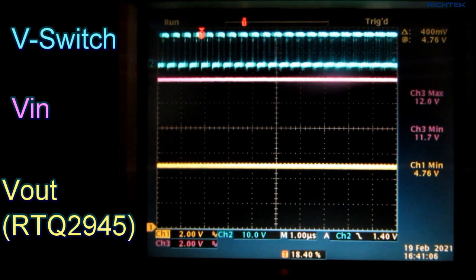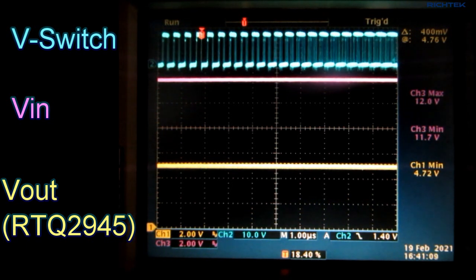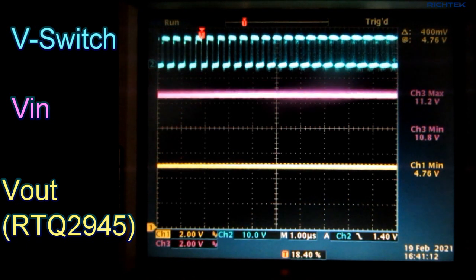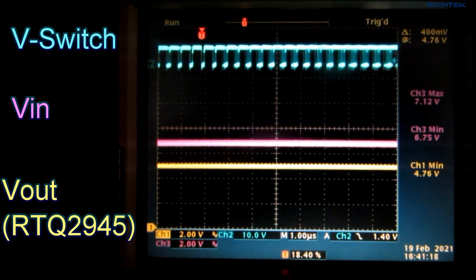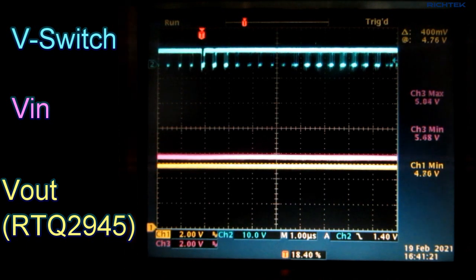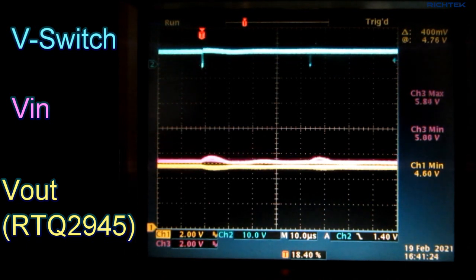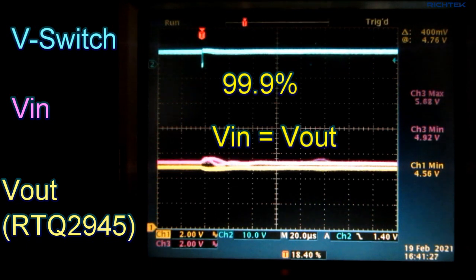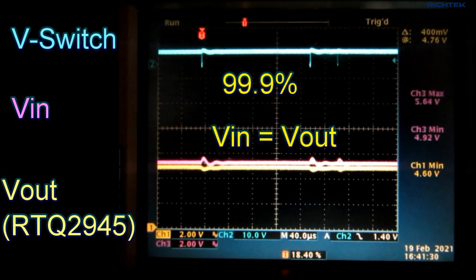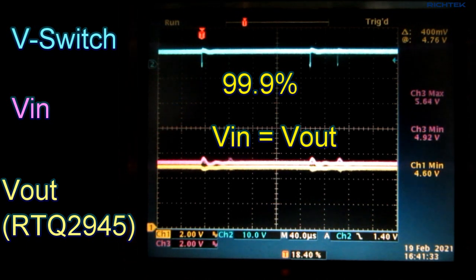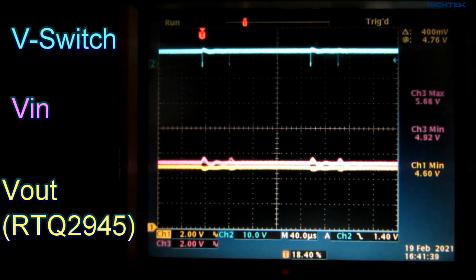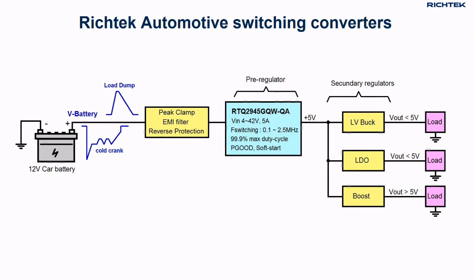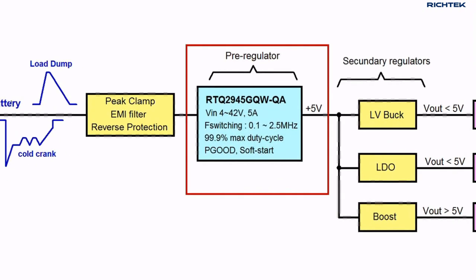Let's take a closer look at the switching waveform when the input voltage is slowly dropping. Originally the converter works at 2.1 MHz. But when the minimum off time is reached, the converter starts to skip pulses to increase the duty cycle further. When the Vin approaches Vout, the converter duty cycle goes to almost 100%. There is only occasionally a switch pulse which is needed to recharge the bootstrap capacitor. This high duty cycle capability makes the RTQ2945 very suitable to deal with cold crank voltage dips.